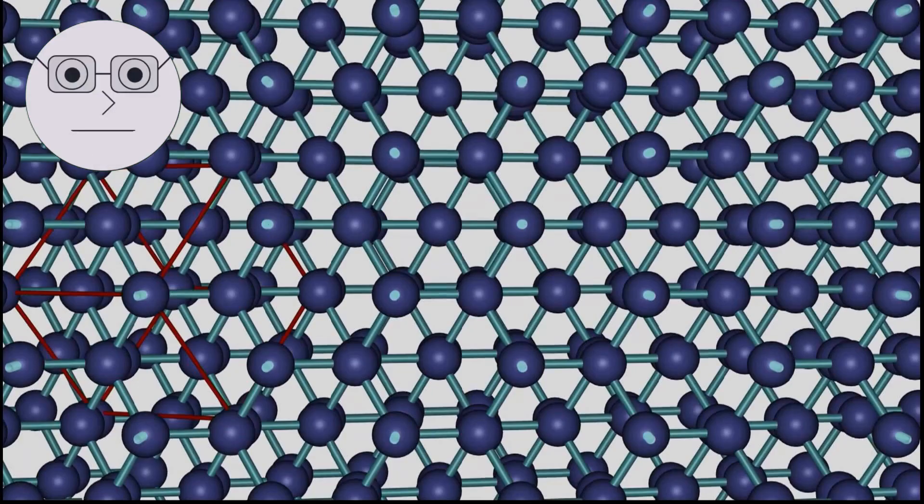So, how are lattices and orderings related? Well, every lattice is also a partially ordered set, where the order is defined by the lattice structure. Conversely, every partially ordered set can be turned into a lattice by defining the supremum and infimum of every pair of elements.